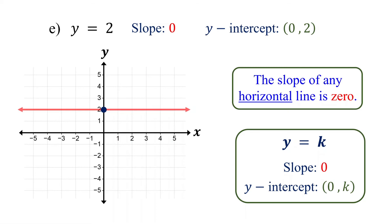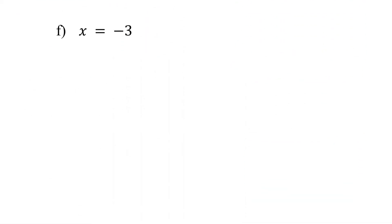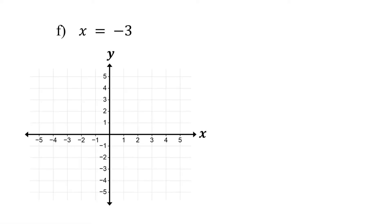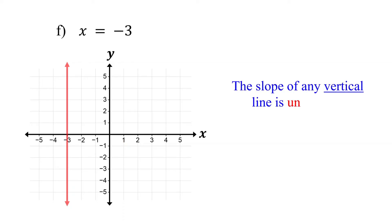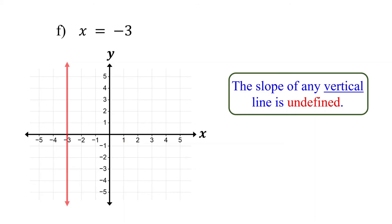Now let's flip the scenario. What happens if there is no y term in the equation? x = -3 means the value of x is always negative 3, no matter the value of y. If you graph it, you will see it is a vertical line crossing the x-axis at negative 3. The slope of any vertical line is undefined because there is no horizontal change.